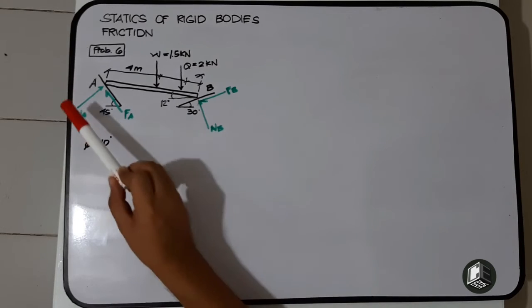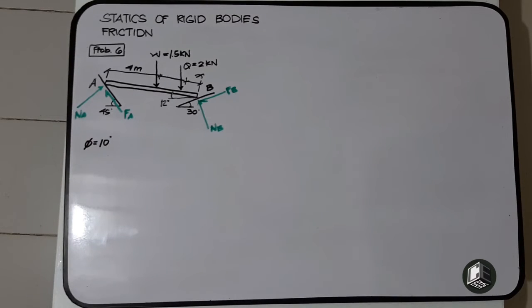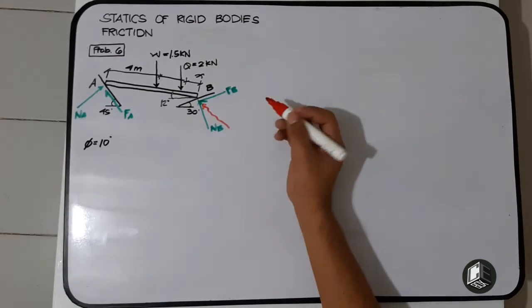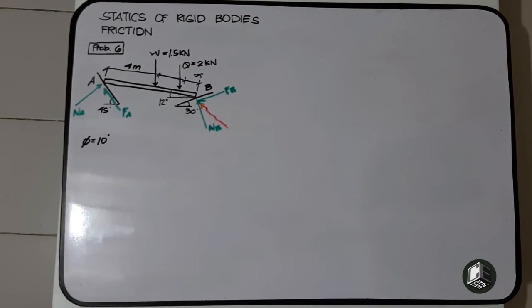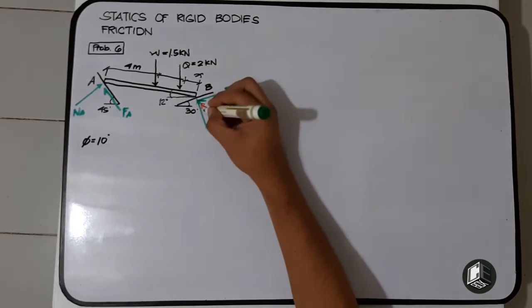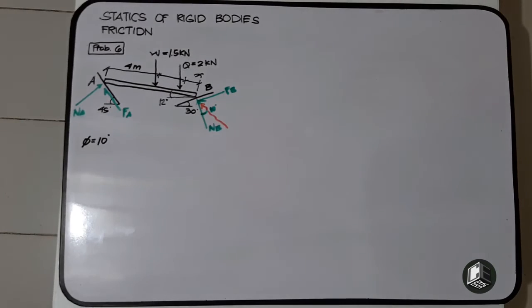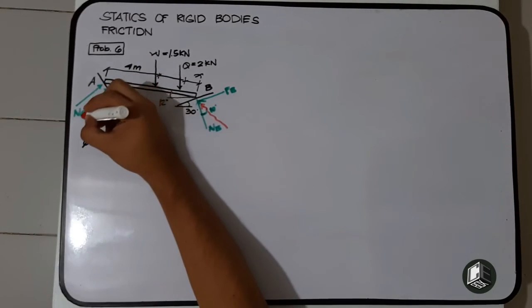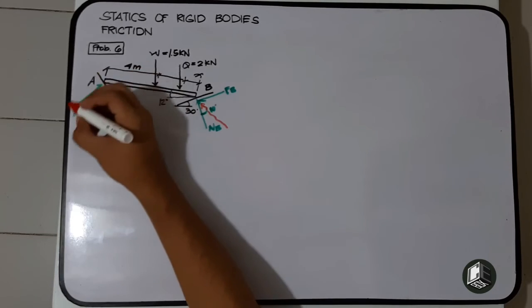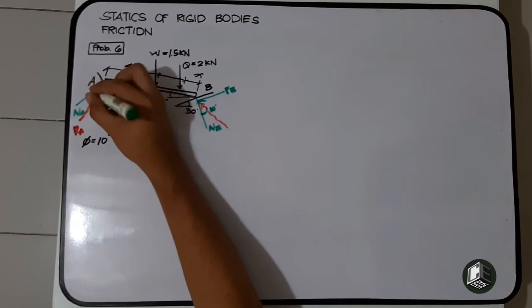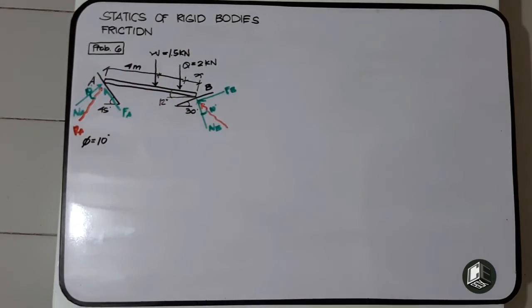Since there are many forces, we'll use the reaction per point using the angle of friction. This is the reaction at point B with the angle of friction of 10 degrees, and this is the reaction at A with the 10 degrees angle of friction.